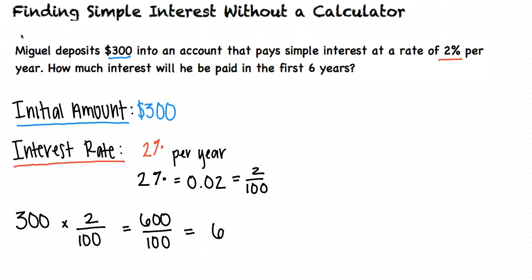Since we've determined that 2% of 300 is 6, and the problem tells us Miguel earns 2% of interest each year, we see that he will earn $6 each year.